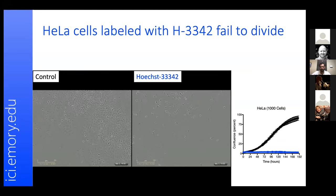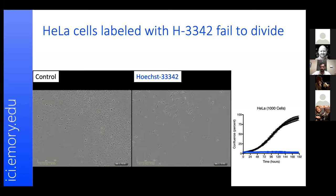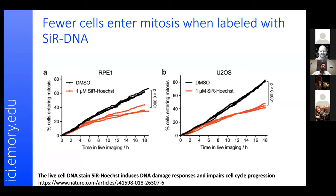The lesson here is it's not just the low wavelength of light that is the problem — I didn't even use fluorescence in this experiment. When Hoechst intercalates with DNA, there are issues. And this is not only relevant to Hoechst: SiR-DNA, which is a silicon rhodamine-based dye and a chemical modification of Hoechst, also intercalates with nucleic acids. In RPE1 and U2OS cells, 1 µM SiR-DNA results in fewer cells entering mitosis compared to controls.